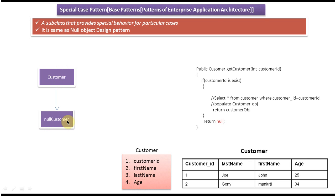The Customer class will look like this — it has customer ID, first name, last name, and age. Now we have a public method: getCustomer(int customerID). If you pass customer ID 1 to this method, it will check whether that customer ID exists in the database. If it is there, it will populate the customer object and return it.